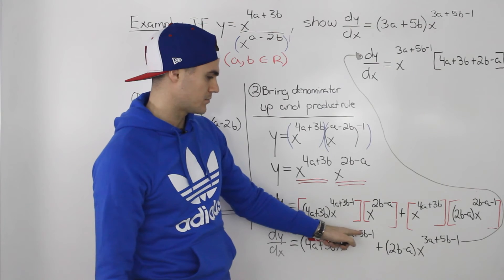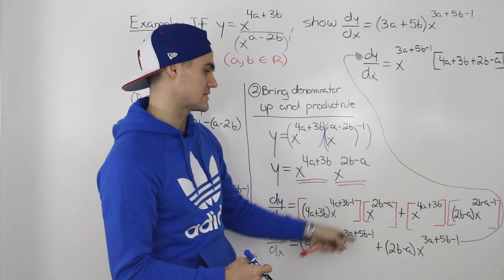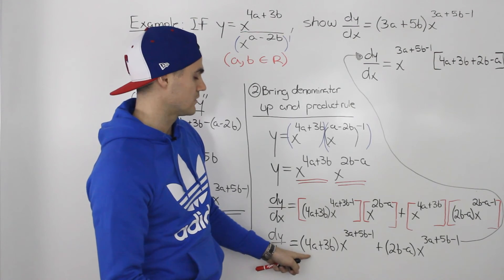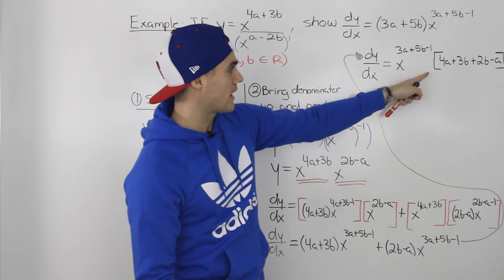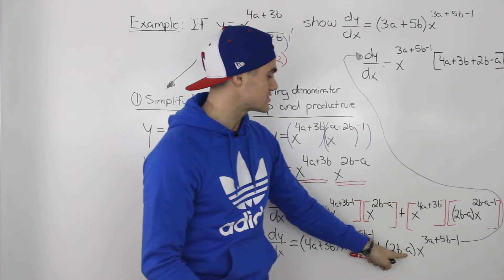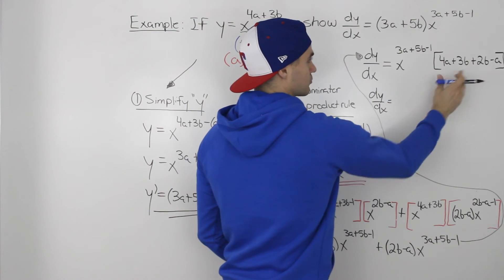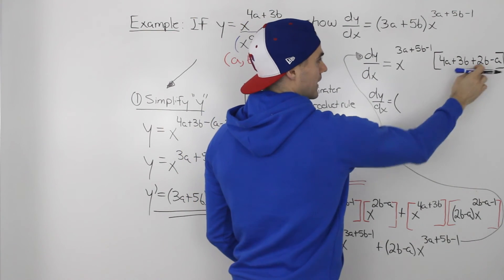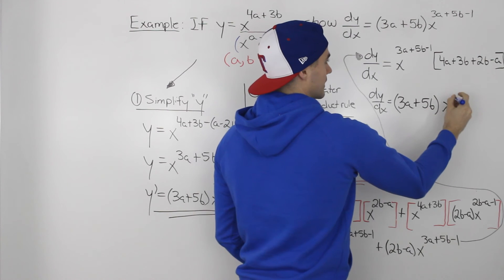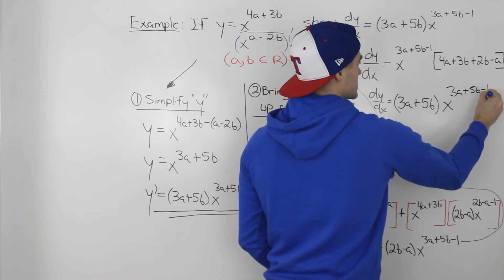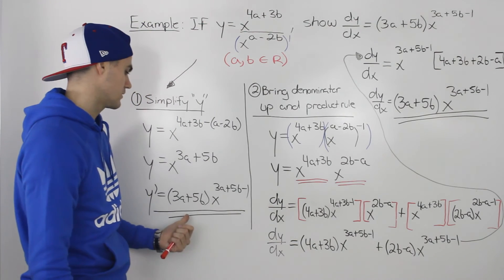Notice that x to the power of 3a plus 5b minus 1 appears in both expressions — it's the same exponent, so we can factor it out as a like term. Factoring it out, we're left in the bracket with 4a plus 3b plus 2b minus a. Simplifying that bracket: 4a minus a is 3a, and 3b plus 2b is 5b. So we get 3a plus 5b, times x to the power of 3a plus 5b minus 1 — which is exactly what we needed to show.